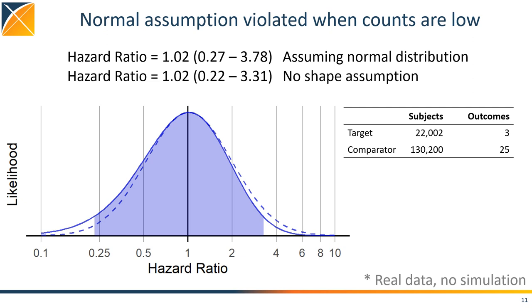In this real-world example, as you can see in the table on the right, we have about 150,000 subjects in total, but only 28 have the outcome, and only 3 in one of the treatment arms. In this case, the likelihood is already not normally distributed. The dashed line indicates the normal approximation applied by most statistical software that produce a point estimate and standard error, while the solid line indicates the actual likelihood.